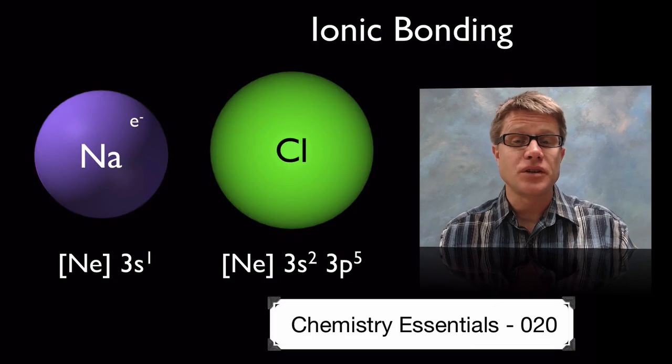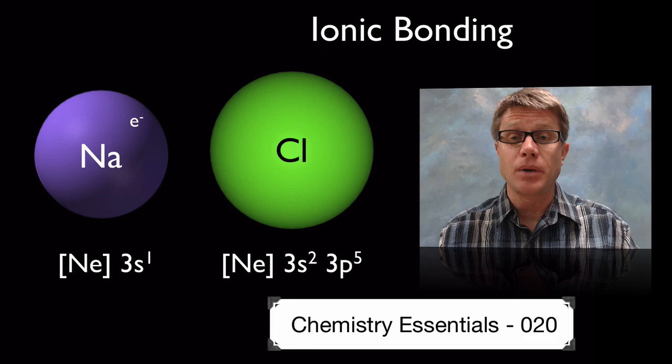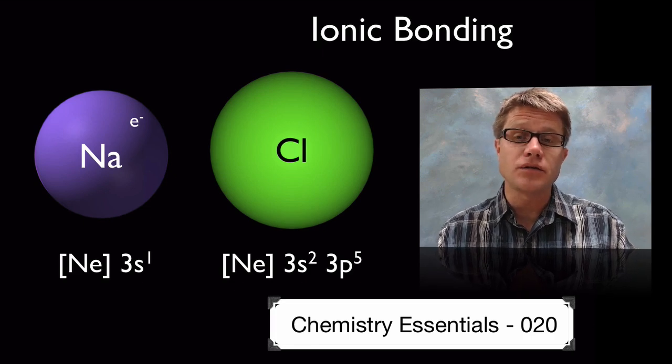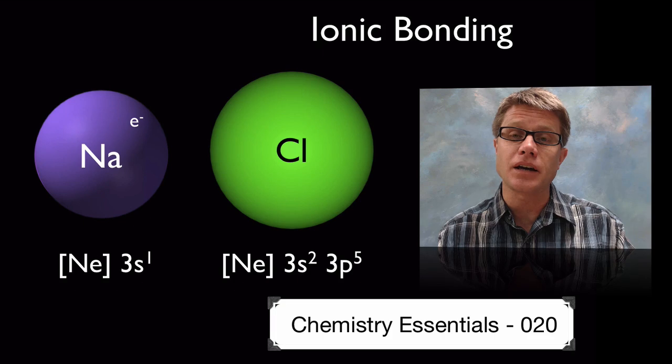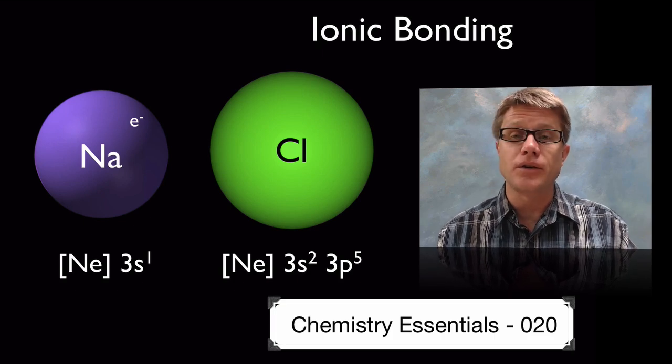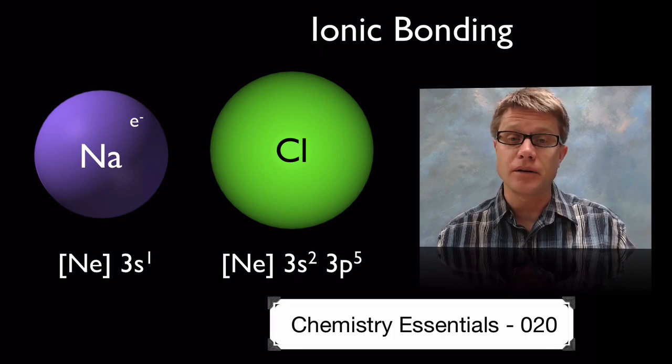Hi. It's Mr. Andersen and this is Chemistry Essentials video 20. It's on ionic bonding. Remember ionic bonding differs from covalent bonding. In covalent bonding they're sharing the electrons. In ionic bonding you're transferring the electron from one atom to another.